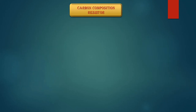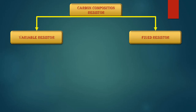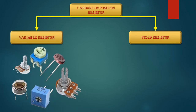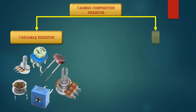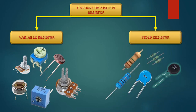The first kind is variable resistors, while the second is fixed resistors. The variable resistor is one whose value we are able to change in our circuits, while a fixed resistor, once placed in the circuit, cannot have its value changed.